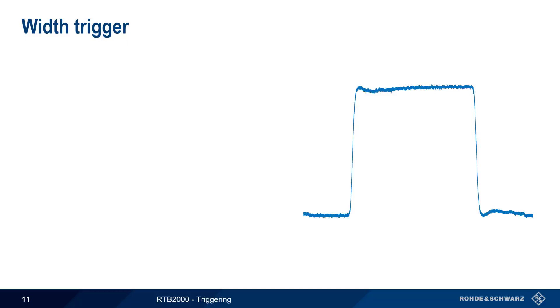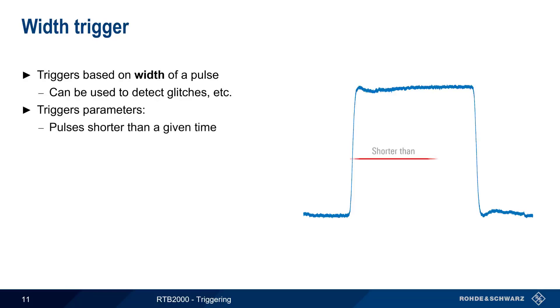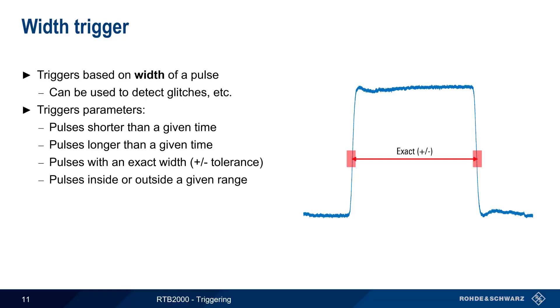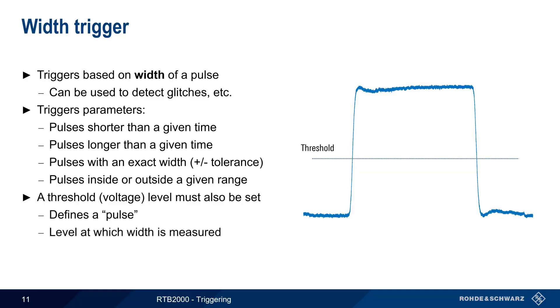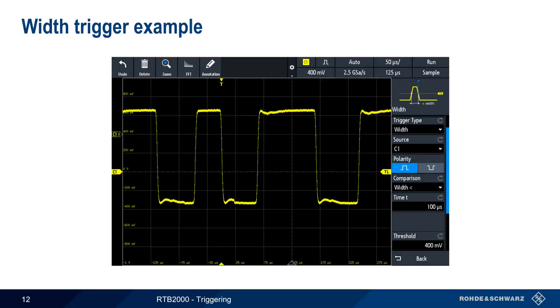Another very common type of trigger is a width trigger, in which triggering is based on the width of a pulse. This is most often used to trigger on things such as very short pulses or glitches. There are a number of different sets of parameters that can be used to trigger on the width of a pulse. For example, we could trigger on pulses that are shorter than a given time, or longer than a given time. We could trigger on pulses with an exact width, plus or minus some tolerance value, and we could also trigger on pulses that are outside of a given range. Note that in all cases, a threshold voltage level must be set. This defines the minimum amplitude required for a waveform to be considered a pulse, and also is the point at which the width of the pulse is measured.